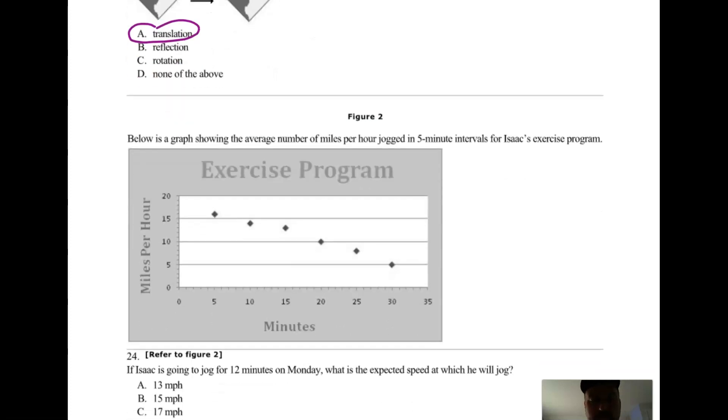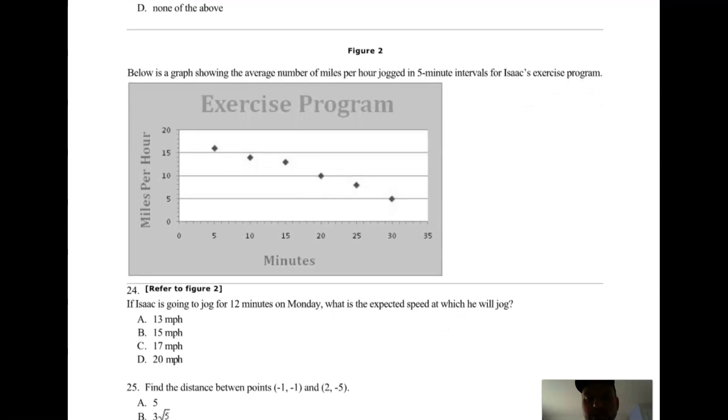Figure 2 below is a graph of the average number of miles per hour jogged in five minute intervals for Isaac's exercise program. If Isaac's going to jog for 12 minutes on Monday, what's the expected speed at which he will jog? So just go to 12, up here and cruise over here. Looks like about 13.